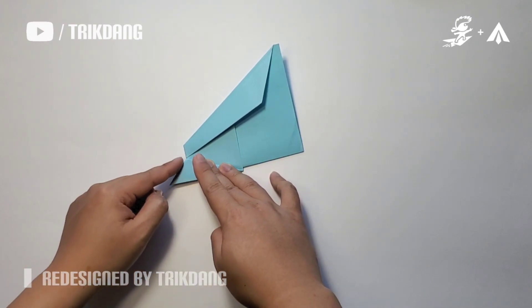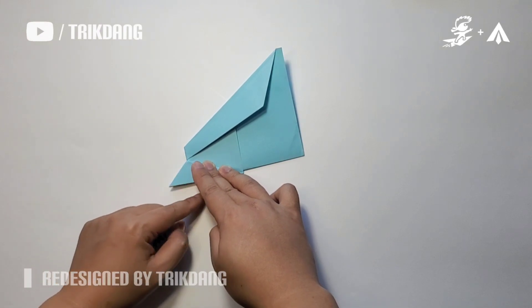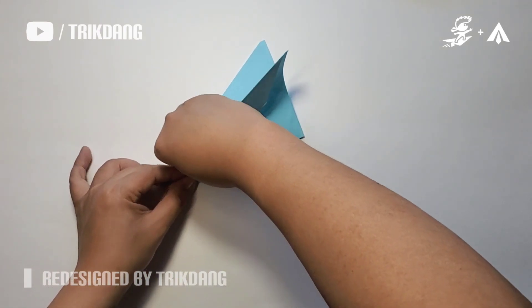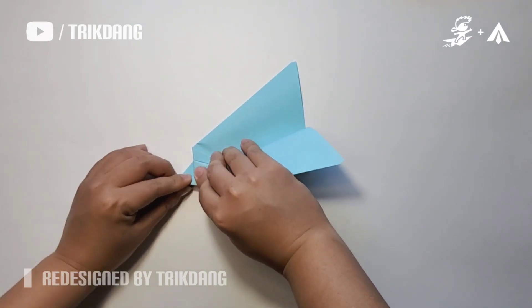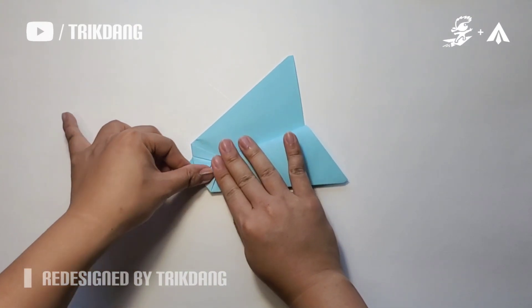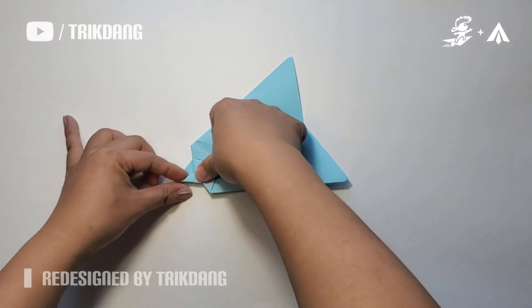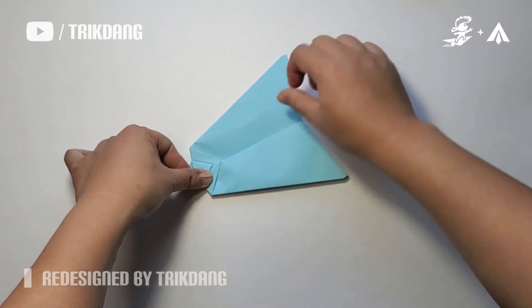This part right here will give you the reference to fold the wings. Start from this upper edge, fold to the below edge. Curve it, because this is very strong now. Curve slowly. Now you can press this down. Press this hard.